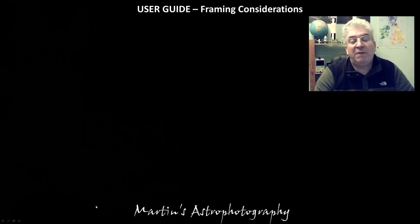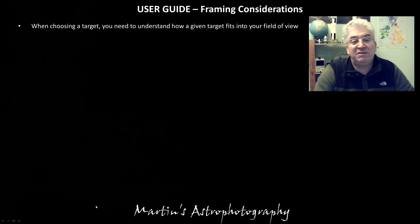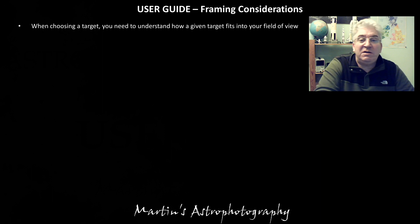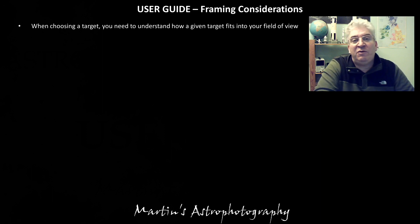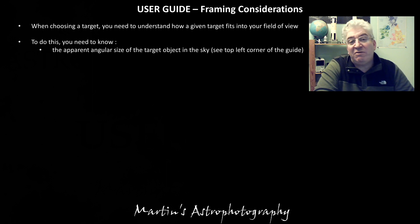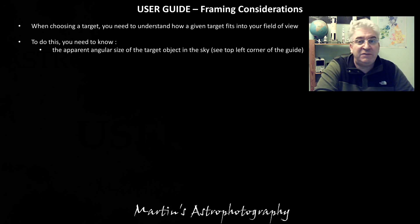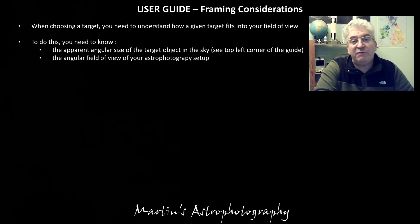I'm going to start by talking about framing considerations. When you're choosing a target you need to understand how it's going to frame in your field of view of your sensor with your telescope setup. So you need to know the apparent size of the target in the sky, which is actually provided in the top left corner of each of the slides that I show for each of the individual targets, and you also need to know the angular field of view of your telescope setup.